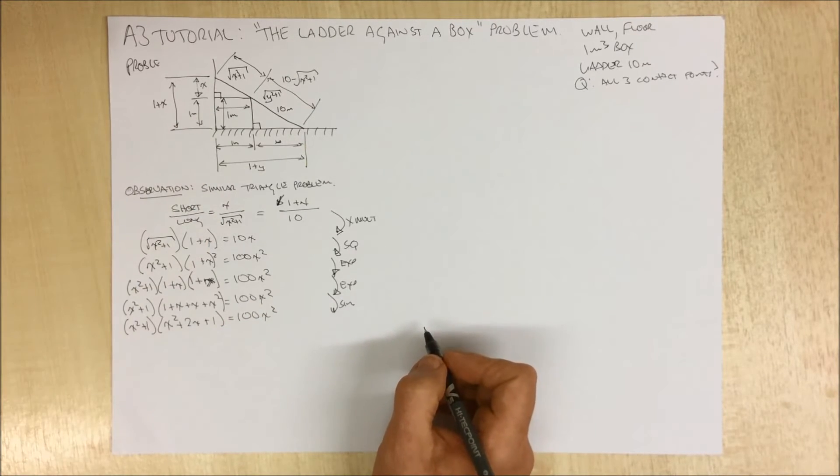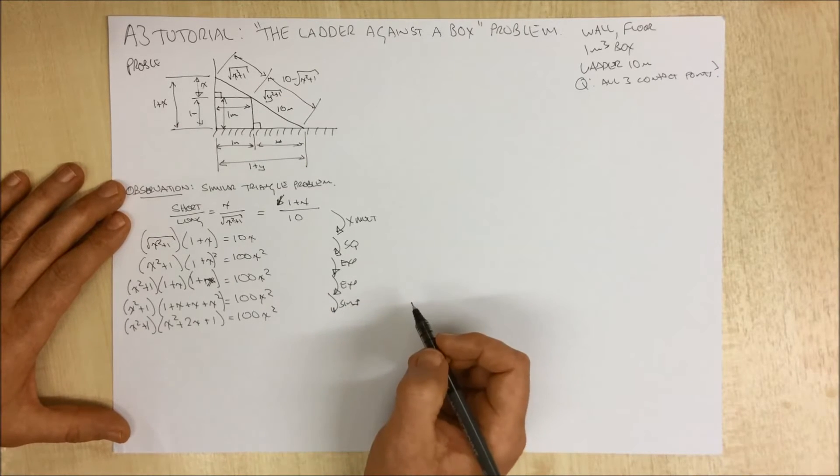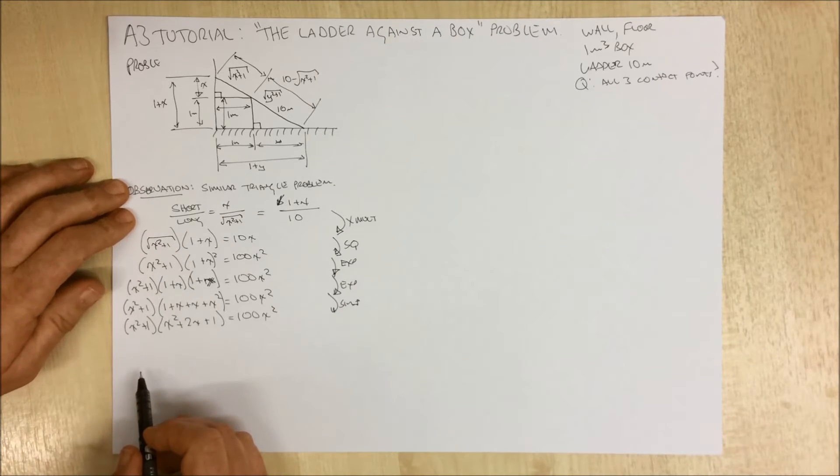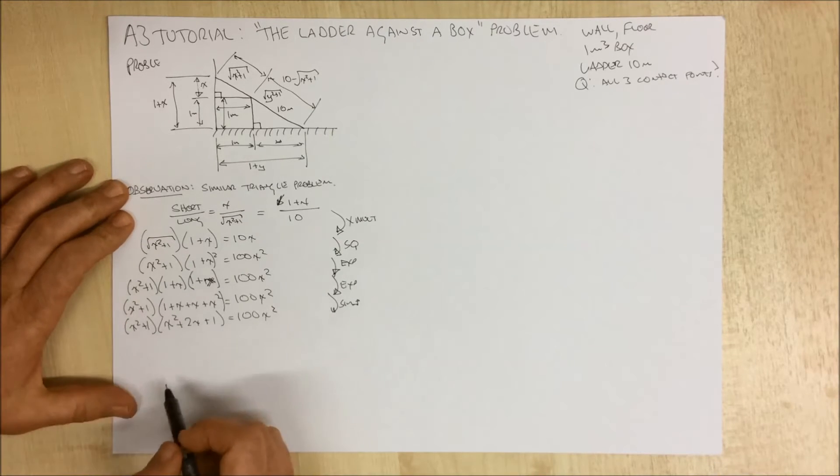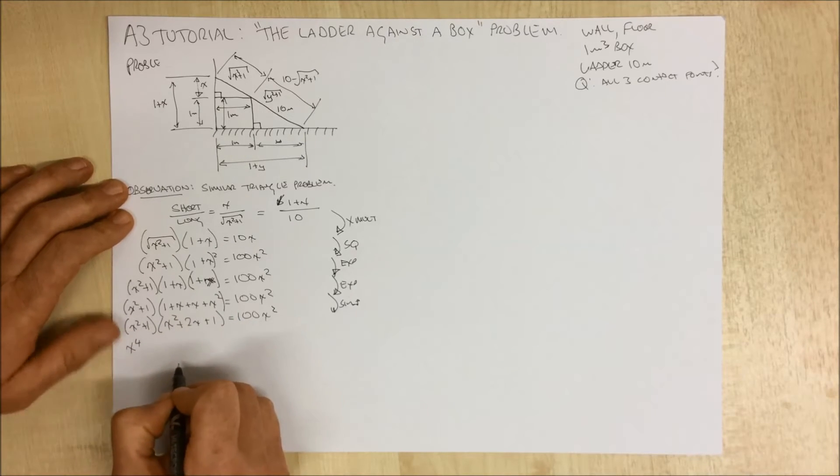So we now have these terms here. What we can now do is expand this out. So x squared times x squared is x to the 4.